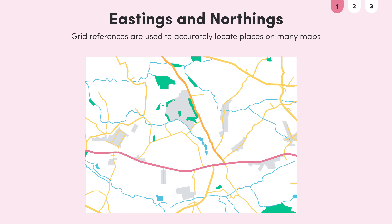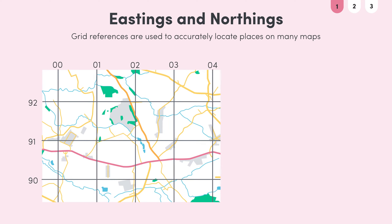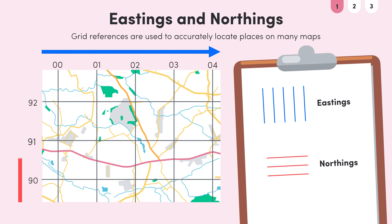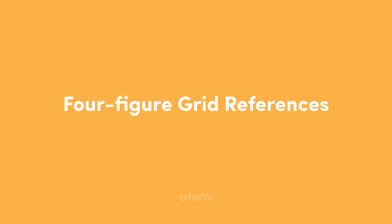Grid references are used to accurately locate places on many maps. Every Ordnance Survey, or OS, map has a grid which is generally shown using numbered lines. These numbers are used to identify the lines. The vertical lines are called Eastings, as their numbers increase towards the east. The horizontal lines are called Northings, as their numbers increase towards the north. These grid lines make squares called grid cells, which can be identified using four figure grid references.